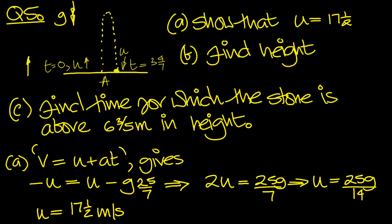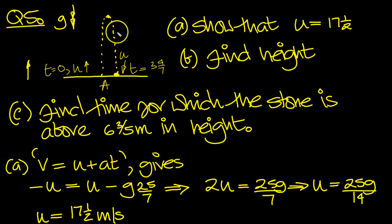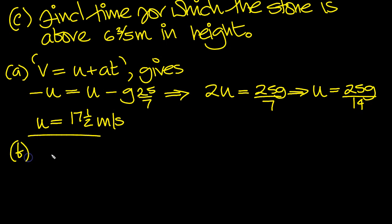Now part b, find the height. Well here's the top height, H, we can label it H. And that's the vertical height. We know here that v is equal to 0. We know the acceleration, we know the initial speed. So we can use the other equation of motion, can't we?